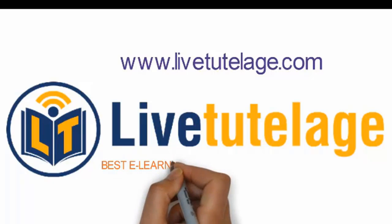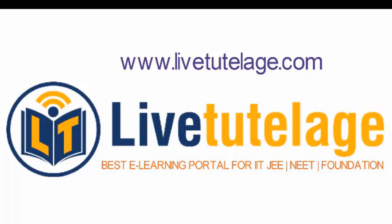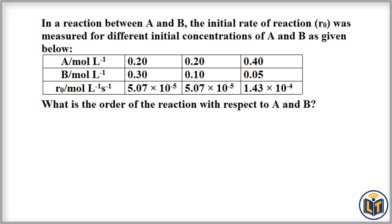Welcome to livetoplace.com, the best e-learning portal for IIT JEE and foundation. In this video I will discuss how to calculate the order of reaction experimentally. The problem says that in a reaction between A and B, there are two reactants. The initial rate of reaction was measured for different initial concentrations of A and B, and the experimental data of reactants A and B along with the rate of reaction is given.